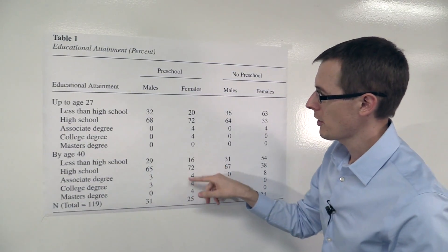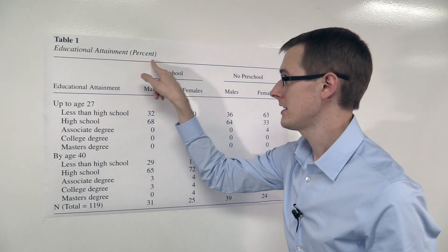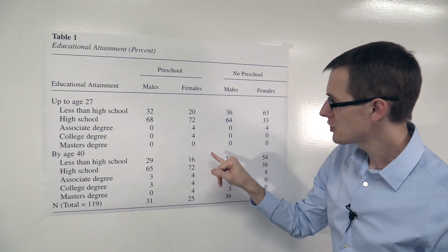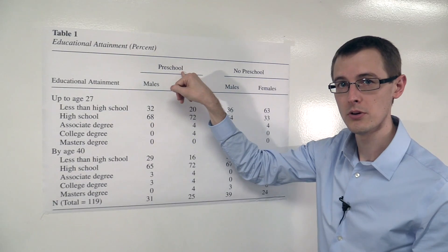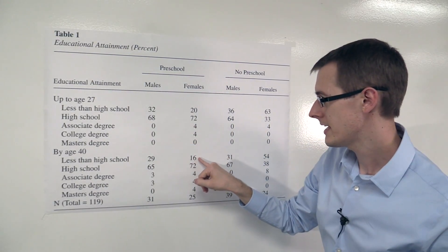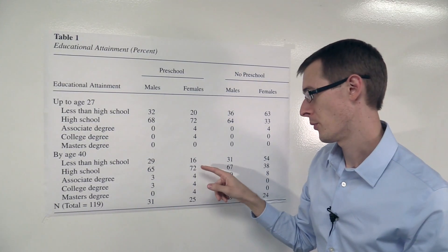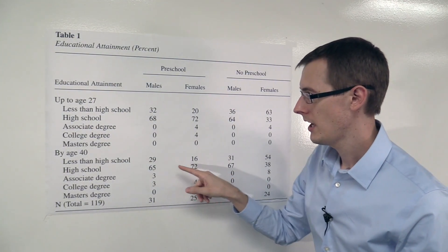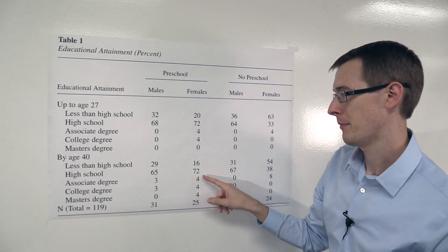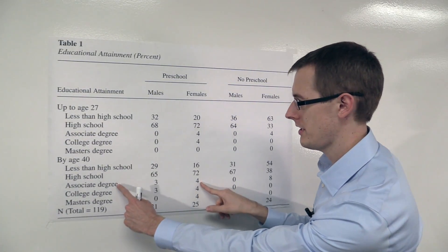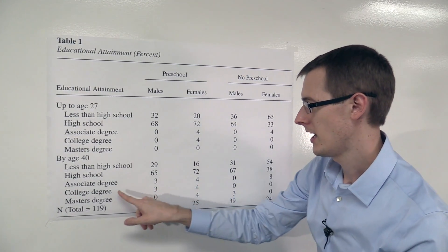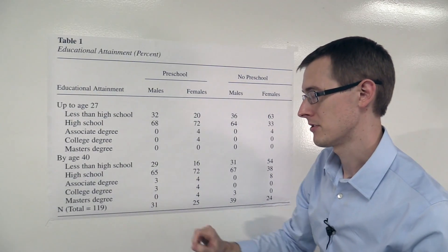And these numbers here are going to be percentages of students. It says percent. So for females who got preschool in the control group, 16% of them got less than high school by the time they were 40. 72% had a high school education by the time they were 40. 4% had an associate degree, 4% had a college degree, and 4% had a master's degree.